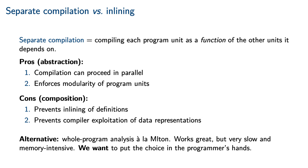Separate compilation also has some problems, especially in regard to composition. First, it can impede the inlining of definitions, which can prevent the compiler from exploiting implementation details. For instance, if the compiler knows how a given piece of code is going to be used, it may be able to generate more efficient code. The main alternative is whole program analysis in the style of the MLton compiler for Standard ML. This works great, but it is very slow and takes a lot of memory. We would like to put the choice in the programmer's hands as to when and where abstractions get broken for the sake of efficiency.